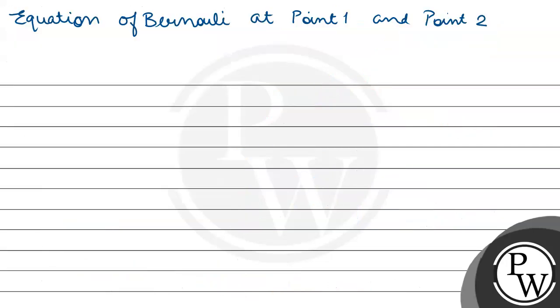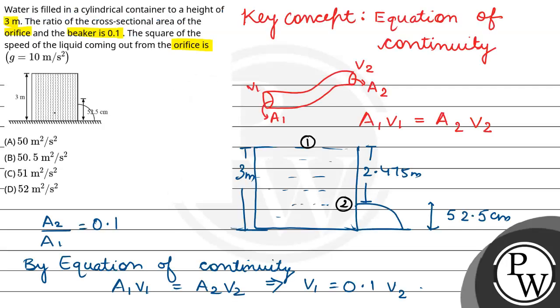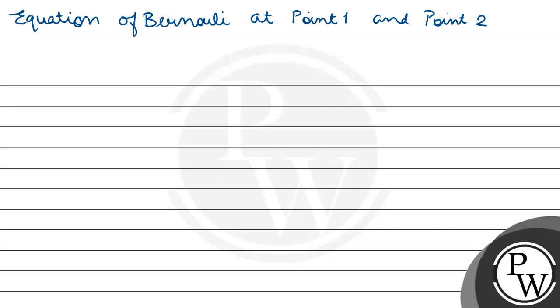Now applying Bernoulli's equation at point 1 and point 2: P0 plus one-half rho V1 square plus rho g h1 equals P0 plus one-half rho V2 square plus zero at the reference level.